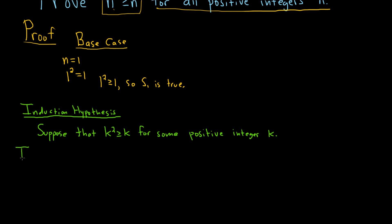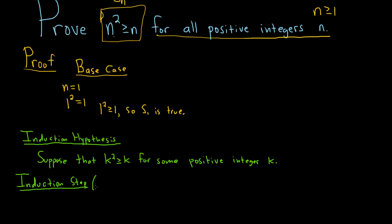The next step is the hardest step — it's called the induction step. This is where you have to show it's true for n equals k plus 1. It's really beneficial to write that down. We must show that our statement is true when n equals k plus 1. So replacing n with k plus 1: k plus 1 squared is greater than or equal to k plus 1. This is what we have to show.